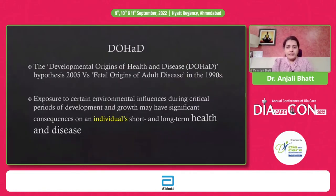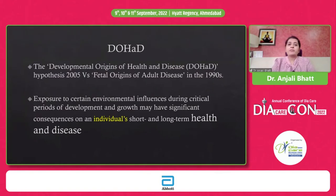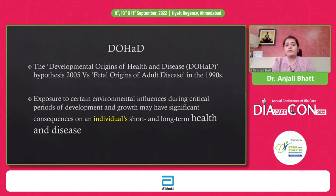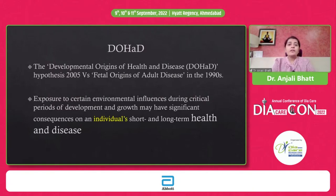Coming to the first point — understanding genetics in a better way. There was a society called Fetal Origin of Health and Disorders; we know it as the famous Barker's hypothesis. Dr. Yagnik sir from Pune has contributed a lot to this topic, where they thought that the exposure to various environmental factors would decide how the individual's long-term health and propensity to disease in future would be affected.